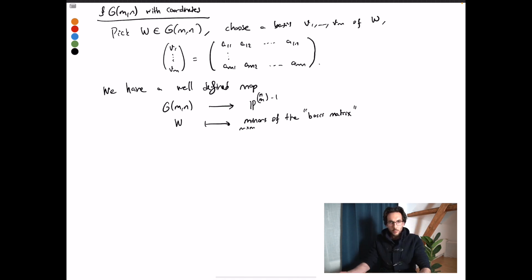So here we choose a basis for W, compute the m by m minors of this basis matrix, the m by n matrix formed by the coordinates of a basis. This is called the Plücker embedding of the Grassmannian. We have to show that it's an embedding. These are left as exercises. Let me write down the key points.